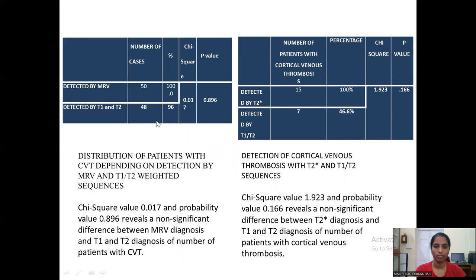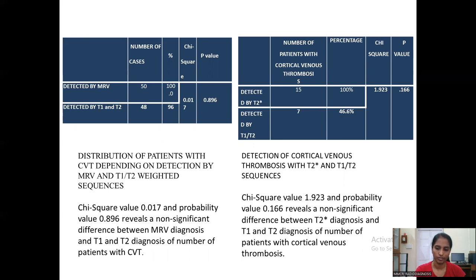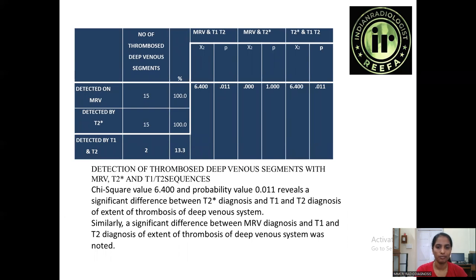The distribution of patients with CVT depending on detection by MRV and T1/T2-weighted sequences is shown here. A chi-square value of 0.017 and probability value of 0.896 reveals a non-significant difference between MRV diagnosis and T1/T2 diagnosis of CVT. The detection of cortical venous thrombosis with T2-star versus T1 and T2 sequences shows a chi-square value of 1.923 and probability value of 0.166, indicating a non-significant difference. However, for detection of deep venous segments, the chi-square value of 6.4 and probability value of 0.011 indicates a significant difference between T2-star and T1/T2 diagnosis, as well as between MRV and T1/T2 diagnosis.